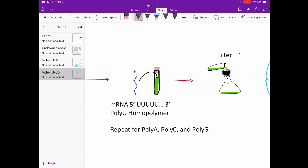Nirenberg and Matthaei then added an mRNA poly-U homopolymer, which only contains uracil. When the mRNA was added, the ribosomes could then form proteins.